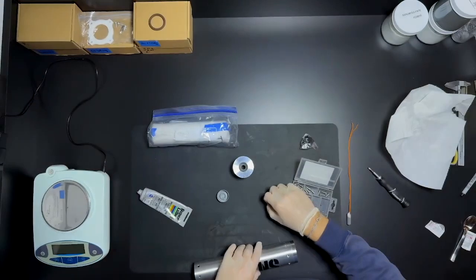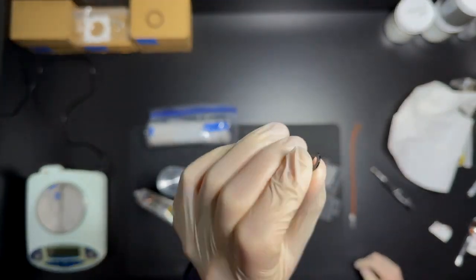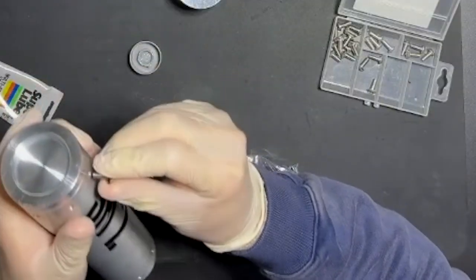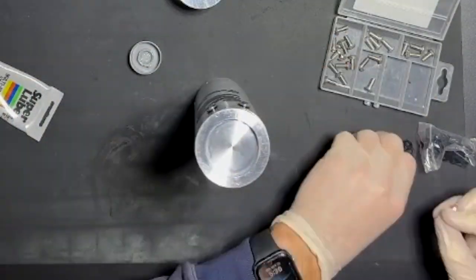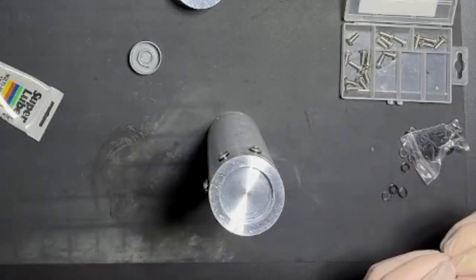To keep the forward closure on, I use M5 12mm screws. And then I do use these plastic washers to prevent the screw heads from digging into the casing. In this design I have a total of seven screws all the way around.